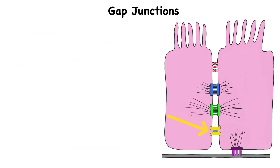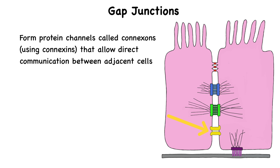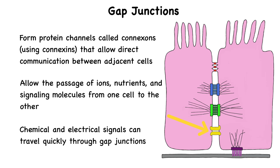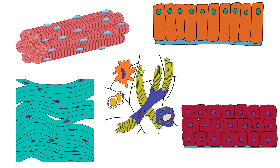Gap junctions form protein channels called connexons that allow direct communication between adjacent cells. They permit the direct passage of ions, nutrients, and signaling molecules from one cell to the other. This type of cell-to-cell communication is critical in tissues that require coordinated activity. For example, in the heart, gap junctions allow electrical impulses to spread quickly from one muscle cell to the next, ensuring that the heart beats in a synchronized, rhythmic fashion. Without them, efficient pumping of blood would be impossible.